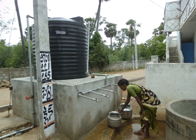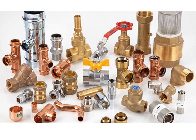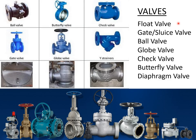I hope that each one of you has got sufficient inputs on water supply system and pipe sizing. Though we have discussed at a very basic level, I am sure that you can apply the information delivered so far in order to work out the water supply system for a residential unit. Apart from these plumbing fittings, certain valves and other devices are also to be used in water supply system. These devices are: float valve, gate valve (also called Swiss valve), ball valve, globe valve, check valve, butterfly valve and diaphragm valve.